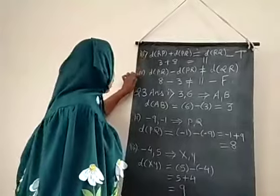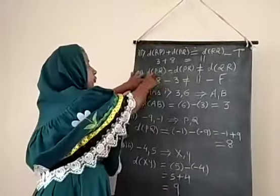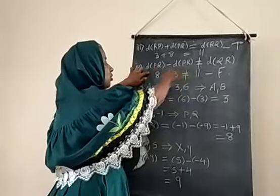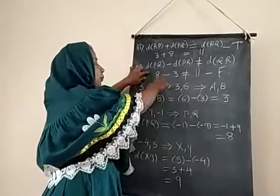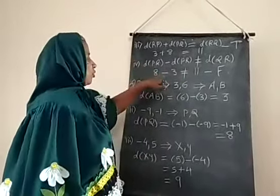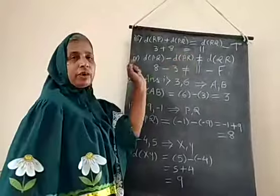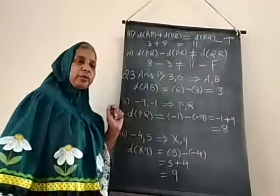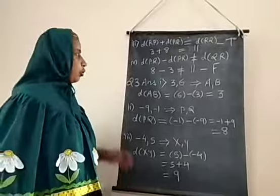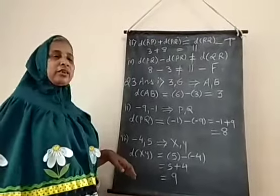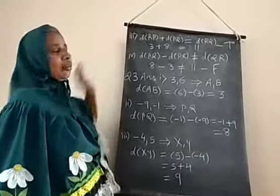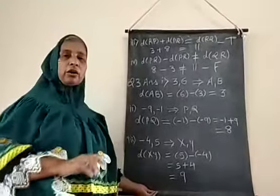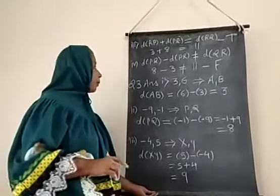In the fourth statement, distance PQ minus distance PR is given: eight minus three equals five, which is not equal to eleven. So the fourth statement is false. In this way we find distances and check whether the given statements are equal or not.